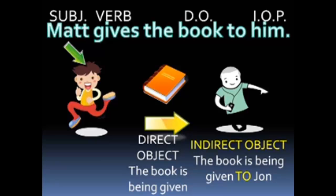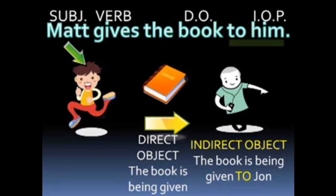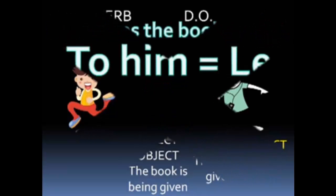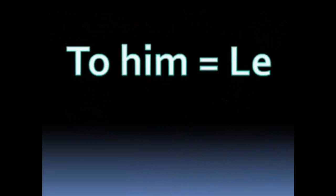If you need this a little slower and need to read it to process it, you're welcome to check the show notes — I'll have this part written out there for you. You'll notice that in English we use two words to identify the indirect object; in the example, those two words were 'to him.' In Spanish, both words are wrapped up into one little indirect object pronoun: le.